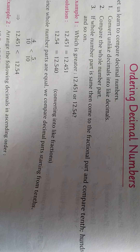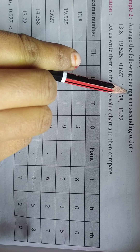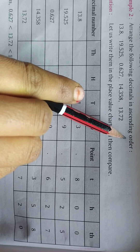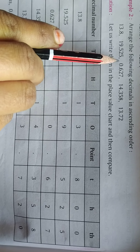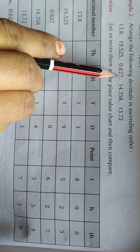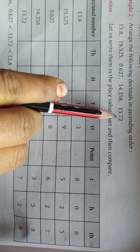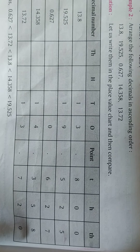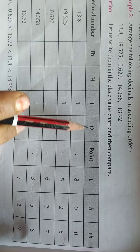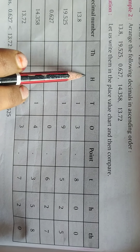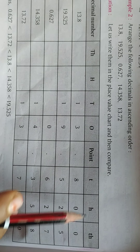Now example two: arrange the following decimals in ascending order — 13.8, 19.525, 0.627, 14.358, and 13.72. I will explain using a chart with place values: thousands, hundreds, tens, ones on the left of the point, and tenths, hundredths, thousandths on the right.